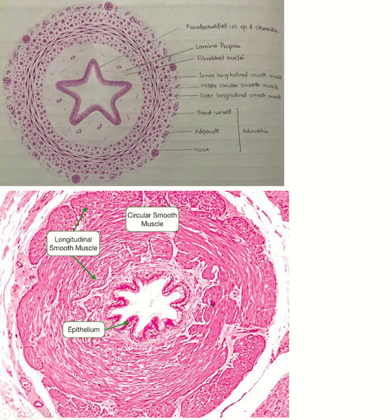Histology of the vas deferens. The inner mucosa is formed by lining epithelium and lamina propria. The lining epithelium is pseudostratified stereociliated columnar epithelium. There is no cilia present; instead it forms stereocilia, which are unusually long microvilli.